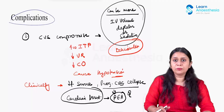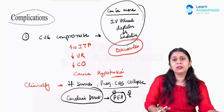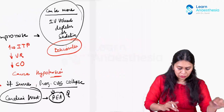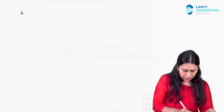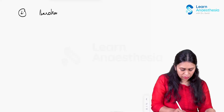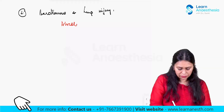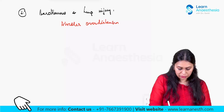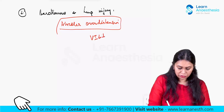The second complication due to intrinsic PEEP: if very high intrinsic PEEP develops, this can cause barotrauma and damage to the alveoli. Barotrauma and lung injury is due to alveolar overdistension, which risks pulmonary barotrauma and causes ventilator-induced lung injury (VILI).